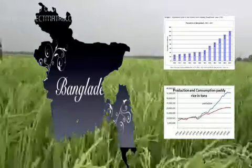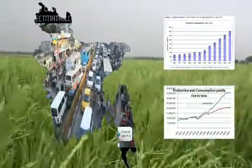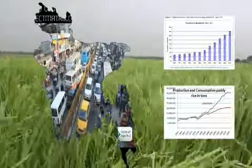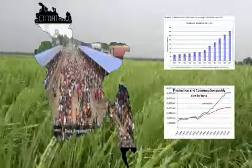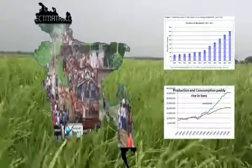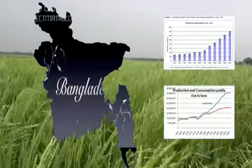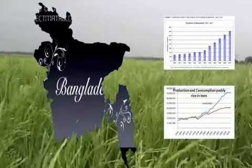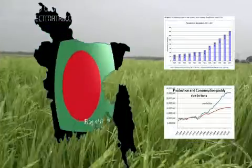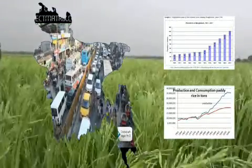If you look at the bar graph, it shows the increasing size of the population. After liberation in 1971, the population size just doubled. At the same time, production also increased. In the map, you can see that the population size is increasing and in the background, you're seeing the rice field. Our production has also increased proportionately and that is why we are now a little bit sufficient in food.